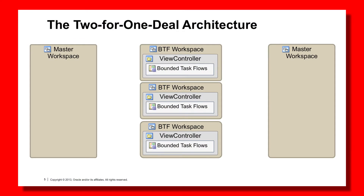Let's describe this diagrammatically and then talk about advantages and disadvantages. In this diagram we have a number of bounded task flow workspaces down the center, similar to the sum of the parts pattern, where we have numerous bounded task flow layers containing one to many bounded task flows. On the left and right side of the diagram we have two master workspaces — think of those as two applications.